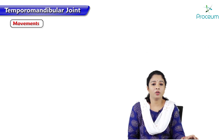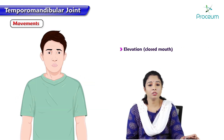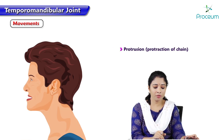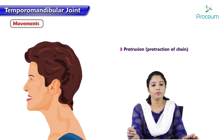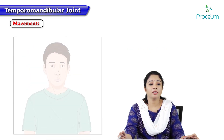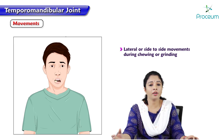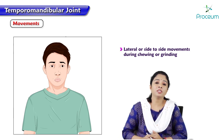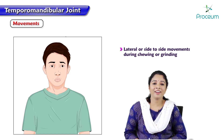The movements of the temporomandibular joint include: depression (opening of the mouth), elevation (closing the mouth), protrusion, retrusion or retraction of the chin, and lateral side-to-side movements during chewing or grinding. This completes the TMJ anatomy. Thank you.